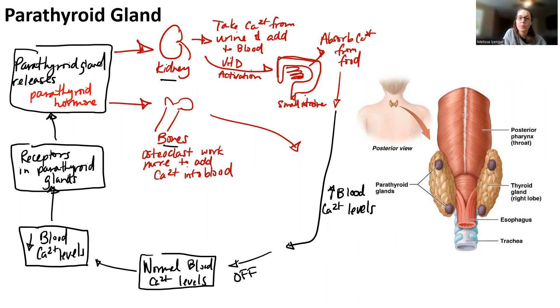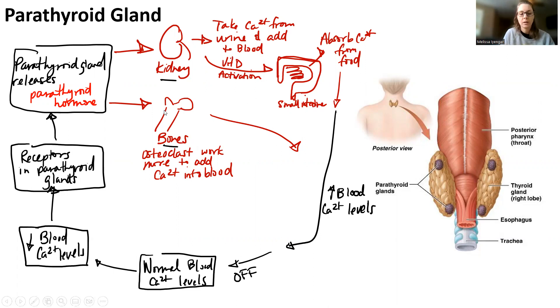So that's our parathyroid gland. There's one more left and that's the pancreas, so let's go over to that.